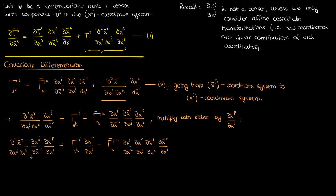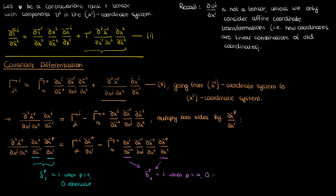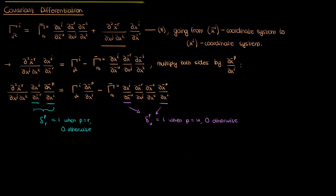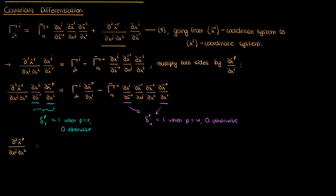Because I have x super i in the numerator and denominator in these partial derivative pairs, both pairs reduce to the Kronecker delta symbol. The first becomes the Kronecker delta with indices r and p, and the second becomes the Kronecker delta with indices u and p. This Kronecker delta is 1 only when p equals r and 0 otherwise; the other is 1 only when p equals u and 0 otherwise. So on the left I replace the r's with p's, and on the right I replace the u's with p's, giving me this equation for the mixed partial derivative of the barred coordinate with respect to two unbarred coordinates.